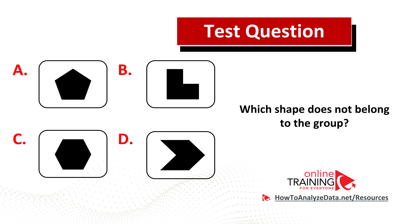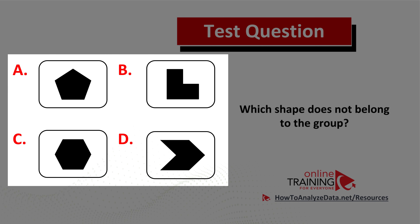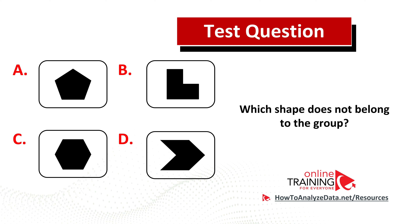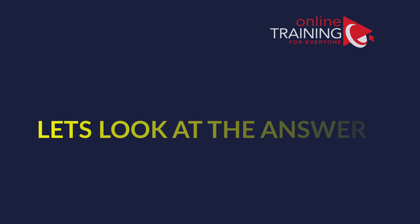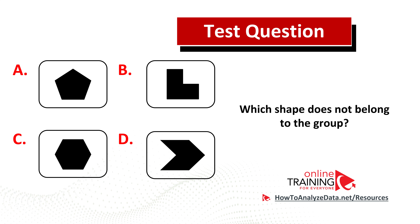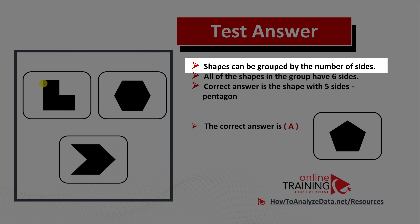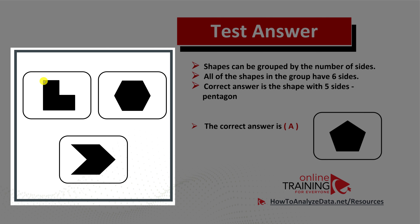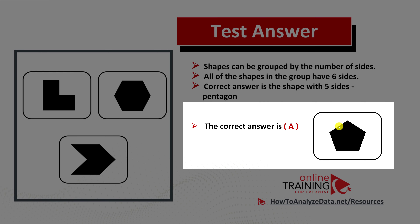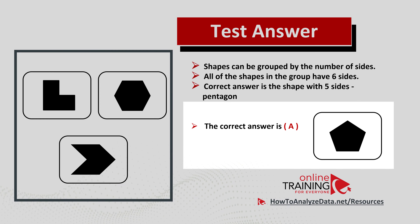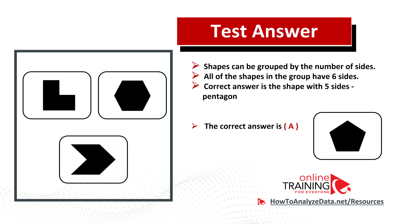This question is quite tricky, but I'd like to show you the solution. Which shape does not belong to the group? You have four choices of shapes. In this case, shapes can be grouped by number of sides. All shapes on the left have six sides — the irregular shape has 1, 2, 3, 4, 5, 6; the hexagon also has 6; and the arrow also has 6. So the correct answer is choice A, the pentagon, which only has five sides: 1, 2, 3, 4, 5. Hopefully you've nailed this question and now know how to answer similar questions on the test.